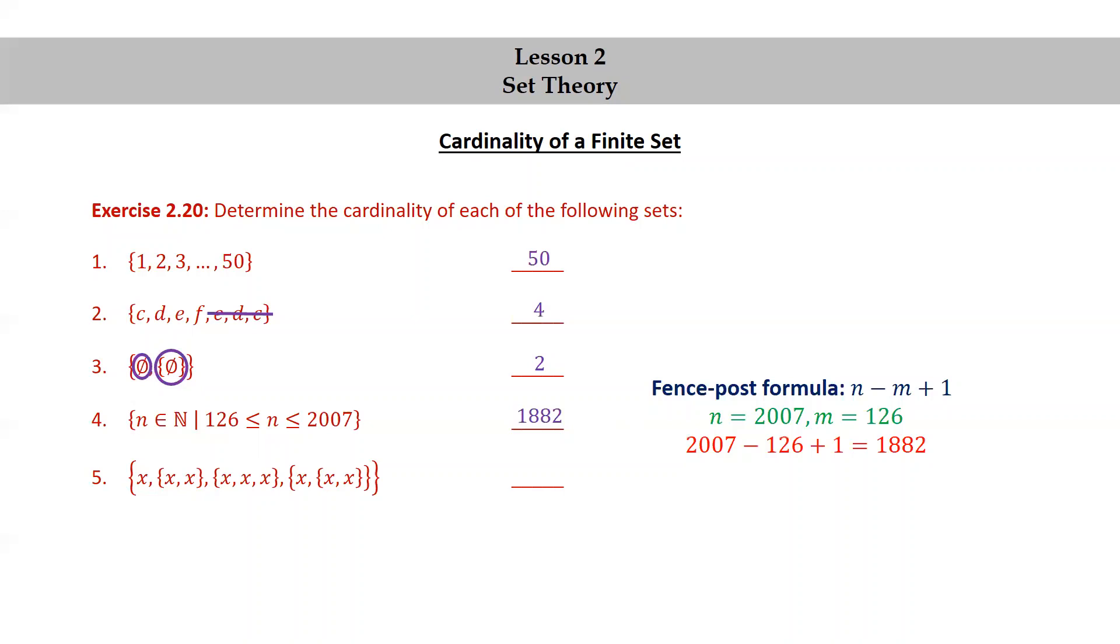Now for the last one, we have the set consisting of {x, {x, x}, {x, x, x}, {x, {x, x}}}.